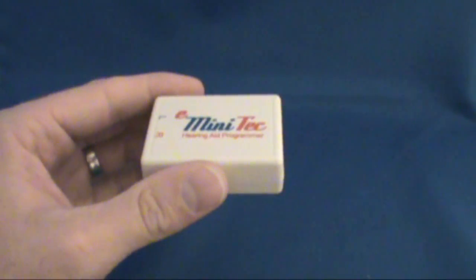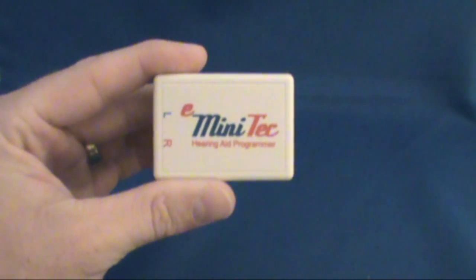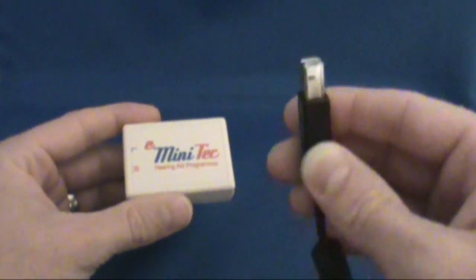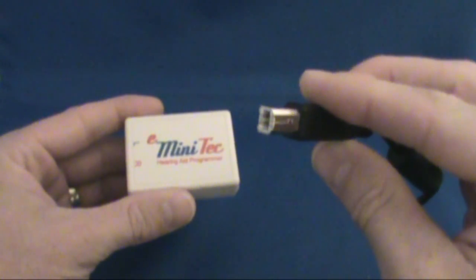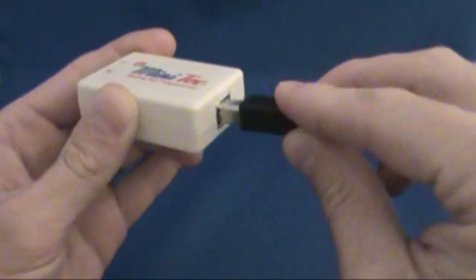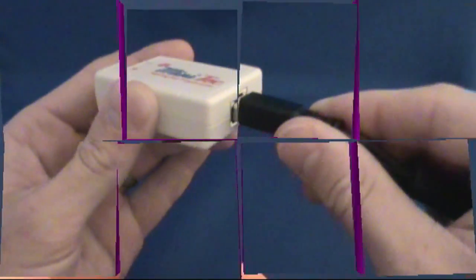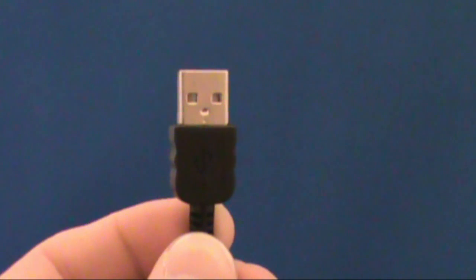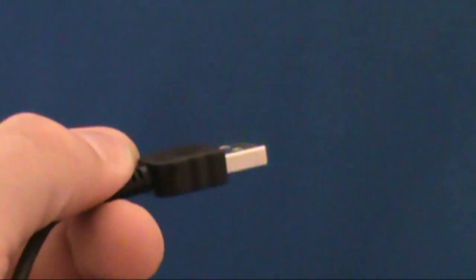First we'll connect the e-minitech to the computer. Using the provided USB cable, take the B end and plug it into the appropriate USB port of the e-minitech hearing aid programmer. Then connect the A end of the USB cable to the USB port on your computer.